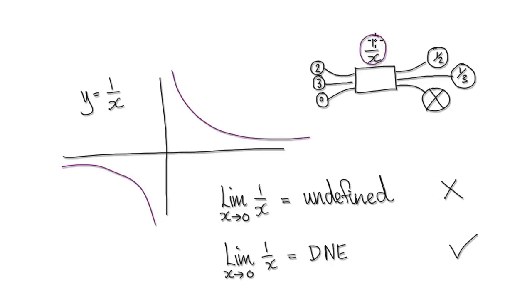If you imagine the 1 over x function, or 1 over x machine, if you put a 2 into the machine, it would spit out a half. If you put in a 3, it would spit out a third.